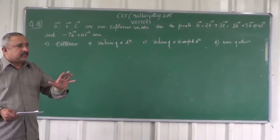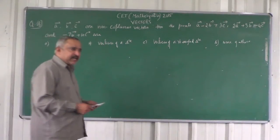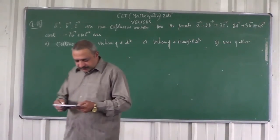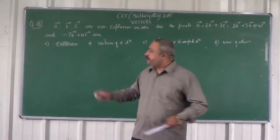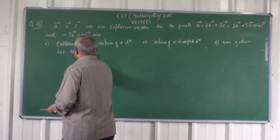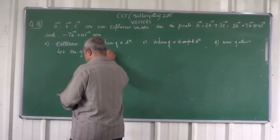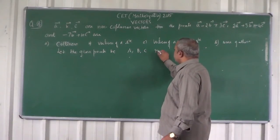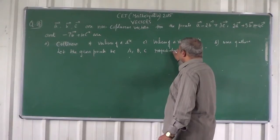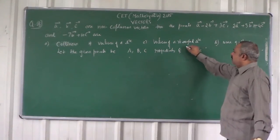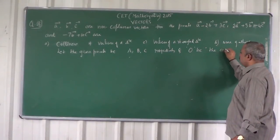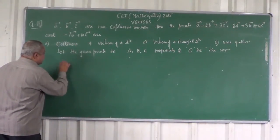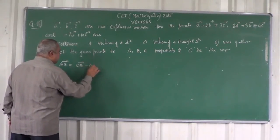How to show that three given points are collinear? The simple method is: let the given points be A, B, C respectively and O be the origin. Consider vector AB, which is OB minus OA.